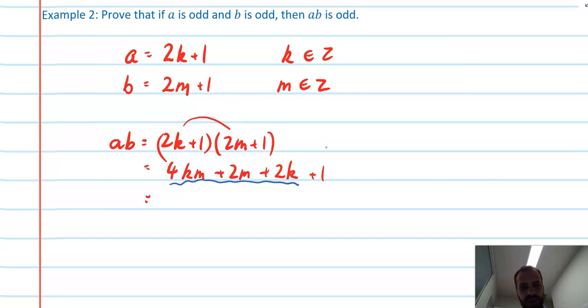So if I can prove that all of that blue underline stuff is even, and then there's that + 1 on the end, then it must be odd, and the game's over. So we can see a common factor of 2 there. That is sort of the secret to it. So now we've got 2(2km + m + k) + 1.